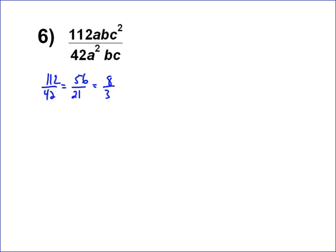Now we rewrite the problem with the variables: a, b, c squared over a squared bc. Write it out without exponents. And all we do is we just take the c squared and make it c times c, right there. And then the a squared and make it a times a.